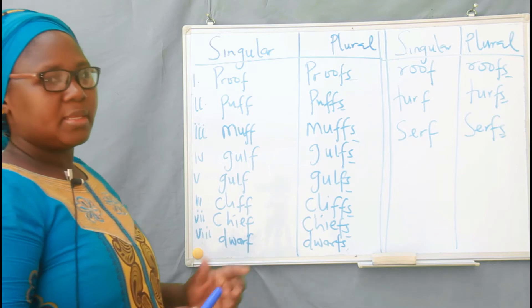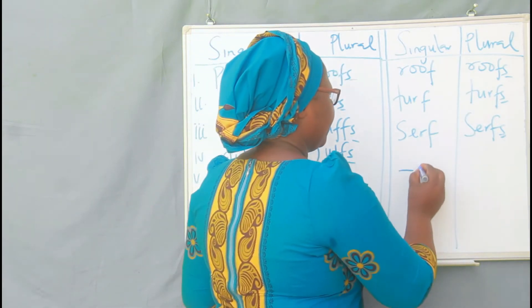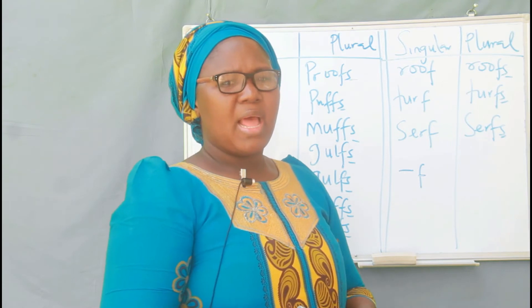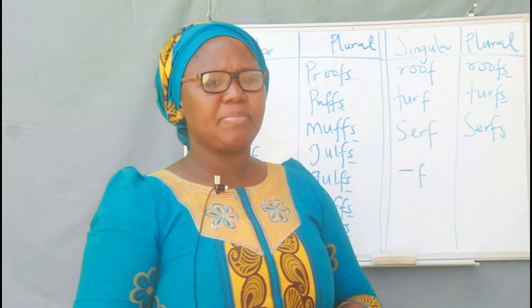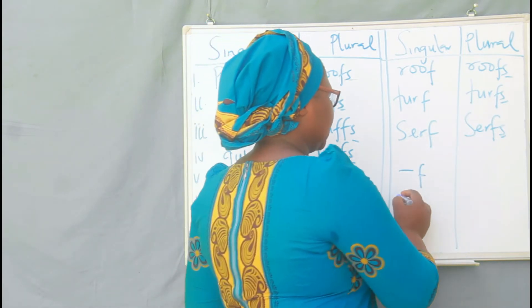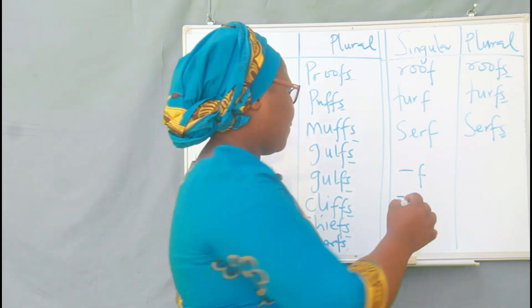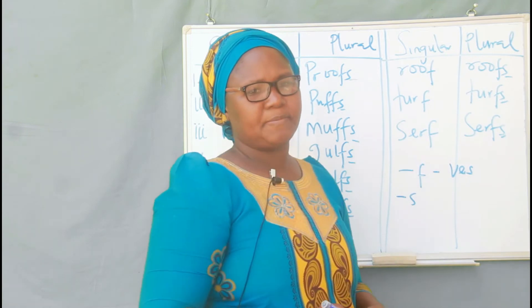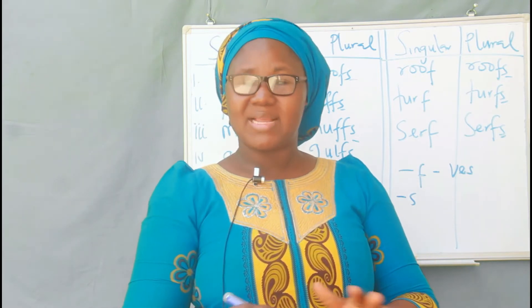We also have some nouns that have two ways of forming their plurals. They can simply form one kind of plural with the addition of S, and the other one changes to VES to form its plural. Either of these two forms is acceptable and correct, but only a few words in English language exhibit these characteristics.